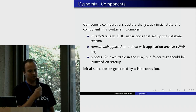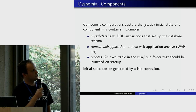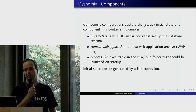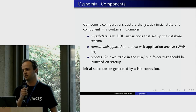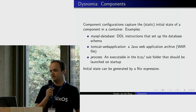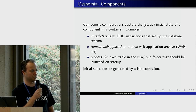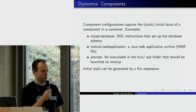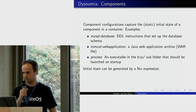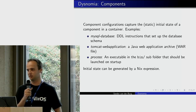To deploy a mutable component to a container, you need to provide its configuration and the static initial state of the component. For a database, that typically means a script containing DDL instructions that set up the schema — creating tables and so on. For a Tomcat web application, you provide the Java web application archive. For a process, you put an executable in the bin subfolder to be launched at startup. The initial state is static, so you can use the Nix package manager to produce it — for example, a function that compiles your Java project from source and produces the WAR file.